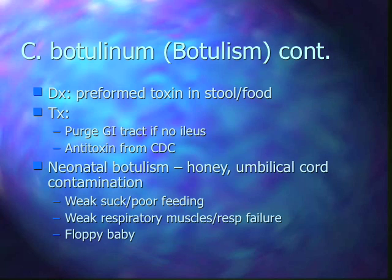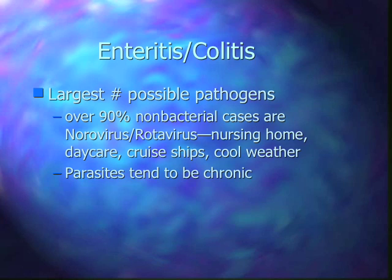Botulism is included here because it's a toxin-mediated pathogen, though it doesn't really fit neatly into gastroenteritis or the other categories. Clostridium botulinum produces both an endotoxin and a neurotoxin — the neurotoxin is what makes it unique. The incubation period is half a day to a little over a day, after which you develop cramps, blurry vision, and often constipation or an ileus. Fever is not common. It's associated with home-canned foods, improper canning techniques, and raw or unpasteurized honey. It is also a preformed toxin that may be found in the stool or food. Treatment is to get rid of the toxin — purge the GI tract unless the patient has a paralytic ileus.